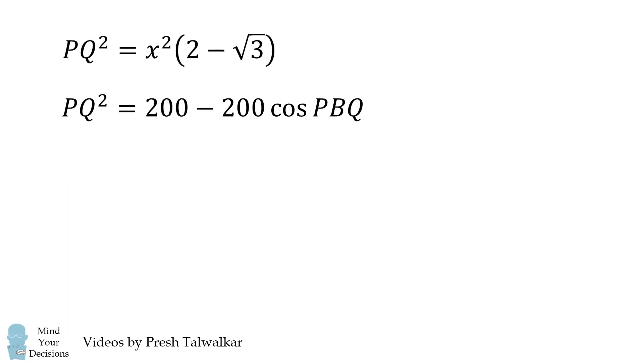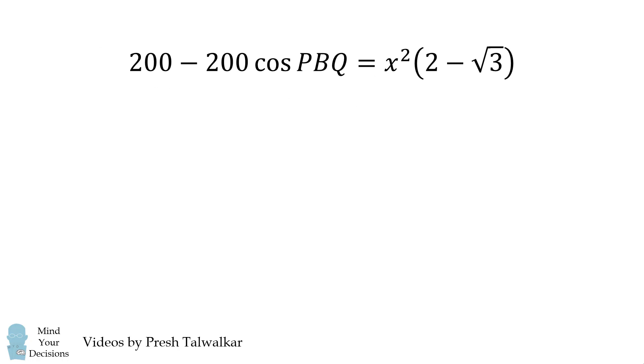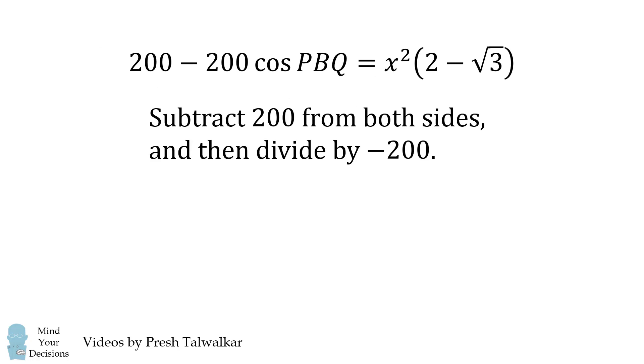So we now have two different expressions for PQ². We're going to set them equal to each other. We subtract 200 from both sides and then divide by -200 to solve: cos(PBQ) = 1 - x²(2 - √3)/200. And that's our answer.